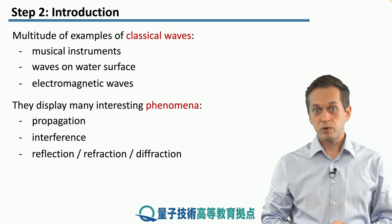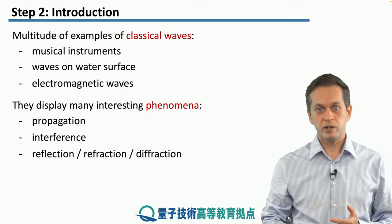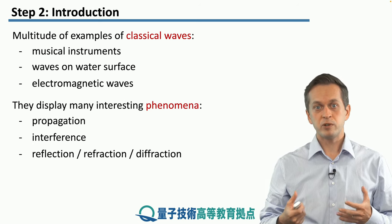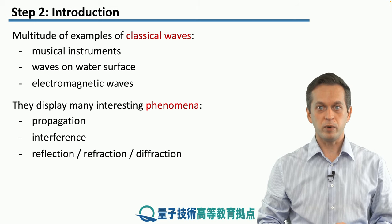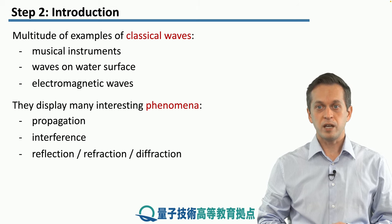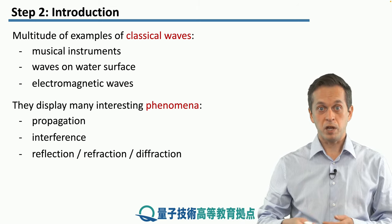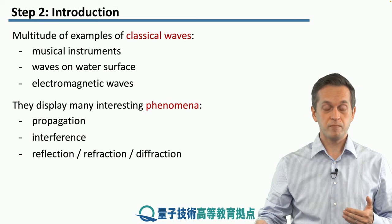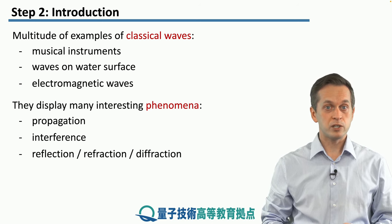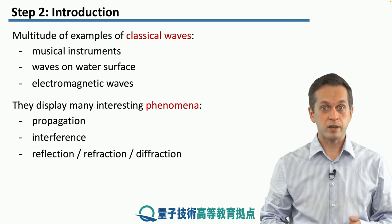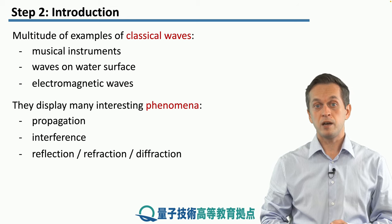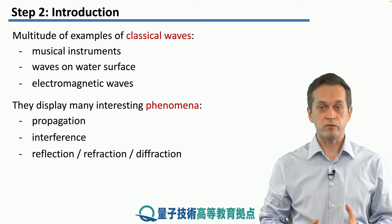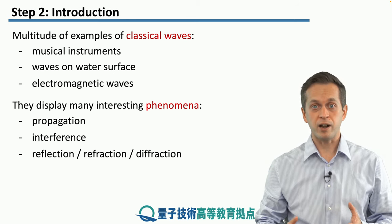These waves are very different in nature and they produce very interesting and complicated phenomena. They can propagate through space, so they evolve in time. They can interfere with each other — we saw examples of interference in our previous module — and they can reflect, refract, and diffract.